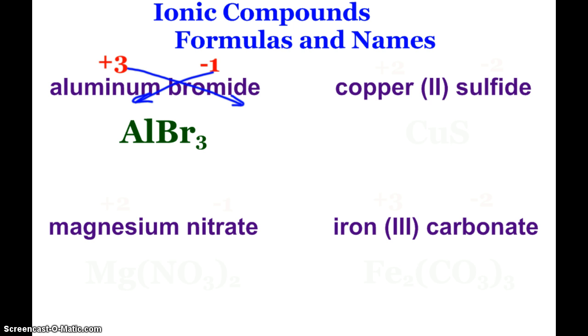Copper 2 sulfide, of course those lovely Roman numerals tell us exactly what the charge is. So copper 2 means it's plus 2. Sulfide, sulfur, like oxygen, wants to gain two more valence electrons, so it has a minus 2 charge. Now here, since they are equal and opposite, I just need one of each ion to make a net charge of zero. Copper sulfide is CuS. It's not Cu2S2. So again, if the charges are equal and opposite, I put one of each together. If they're not equal and opposite, I can do the crisscross thing.